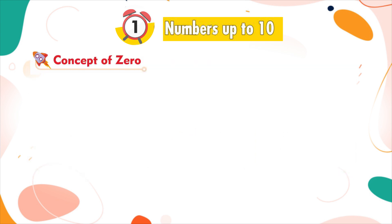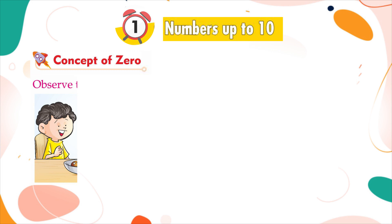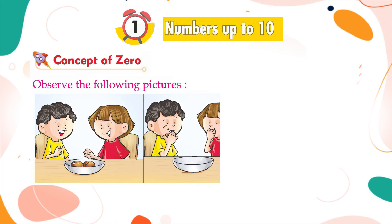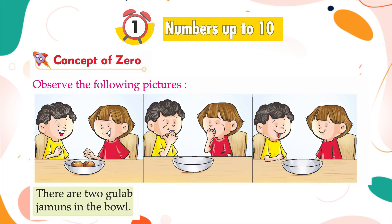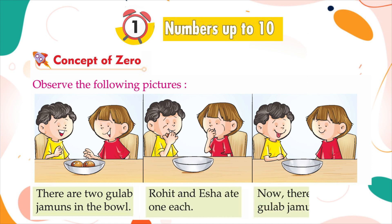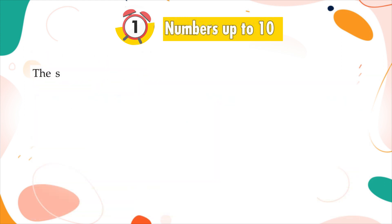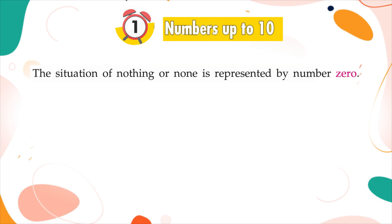Concept of zero. Observe the following pictures. There are two gulab jamuns in the bowl. Rohit and Isha ate one each. Now there are no gulab jamuns left. The situation of nothing or none is represented by the number zero. Zero is written as 0.